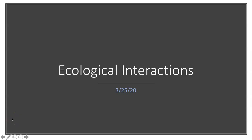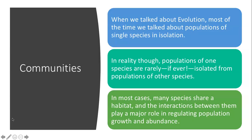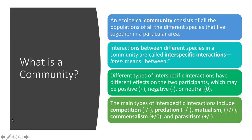Hello everyone and welcome to the next lecture on ecological interactions. Previously when we talked about evolution, most of the time we talked about populations of a single species that were in isolation, but in reality populations of one species rarely if ever are isolated from other populations of other species. In most cases they share a habitat and the interactions between them play a major role in regulating their population growth and abundance. We call these communities — an ecological community consists of all of the populations of all the different species that live together in a particular area.